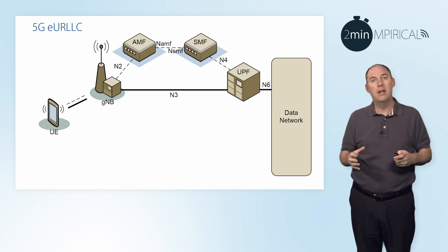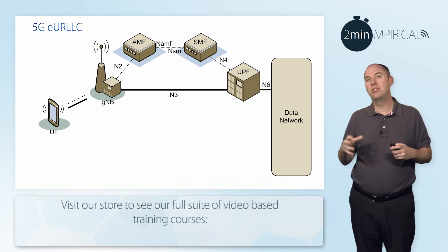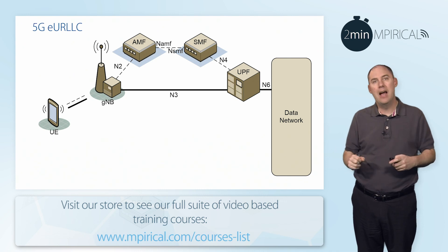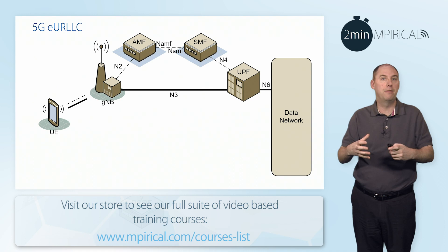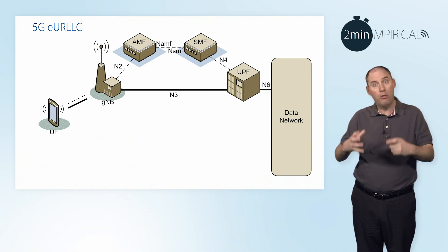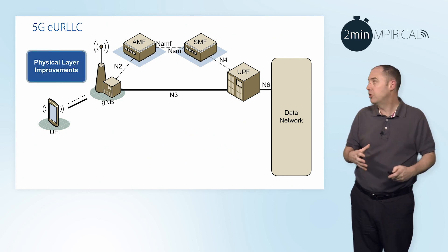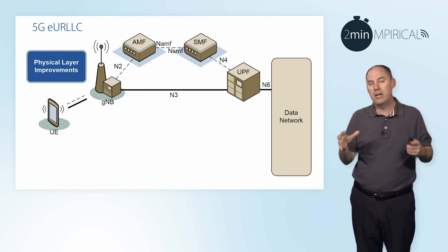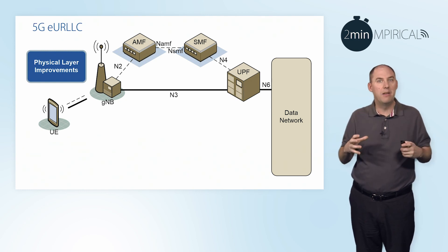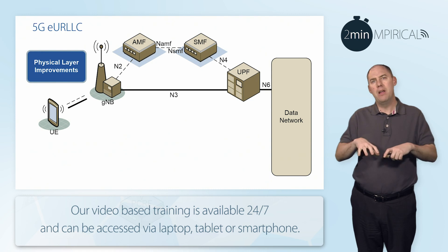A key part of ultra-reliable low-latency communications is the implementation of the air interface, and that was done as part of some of the initial aspects of Release 15. As part of the enhanced version, we're going to see some physical layer improvements — improving how those channels work, assisting in better access for the low-latency and ultra-reliable aspects that we need.